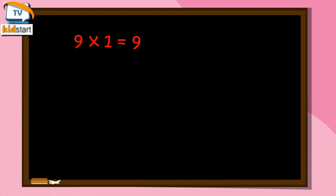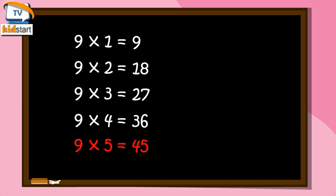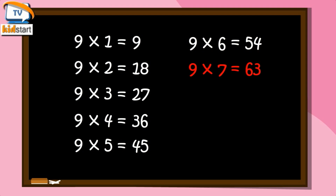9 ones are 9, 9 twos are 18, 9 threes are 27, 9 fours are 36, 9 fives are 45, 9 sixes are 54, 9 sevens are 63.